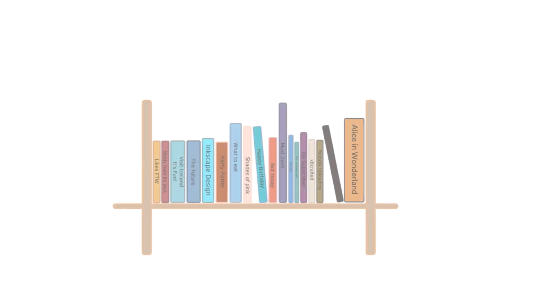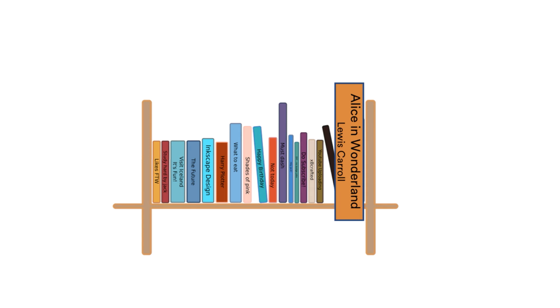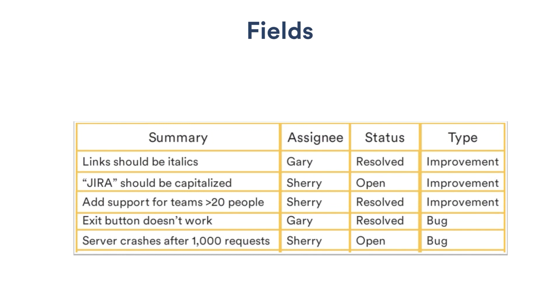But how do we find the issues we need? Well, if we're looking for a book in a library, we identify a few attributes and start our search. For example, we might look for a book with a title of Alice in Wonderland and an author of Lewis Carroll. In the case of Jira, the attributes we use for searching are fields — and fields are where the issue's data is stored. You create search queries based on those fields.